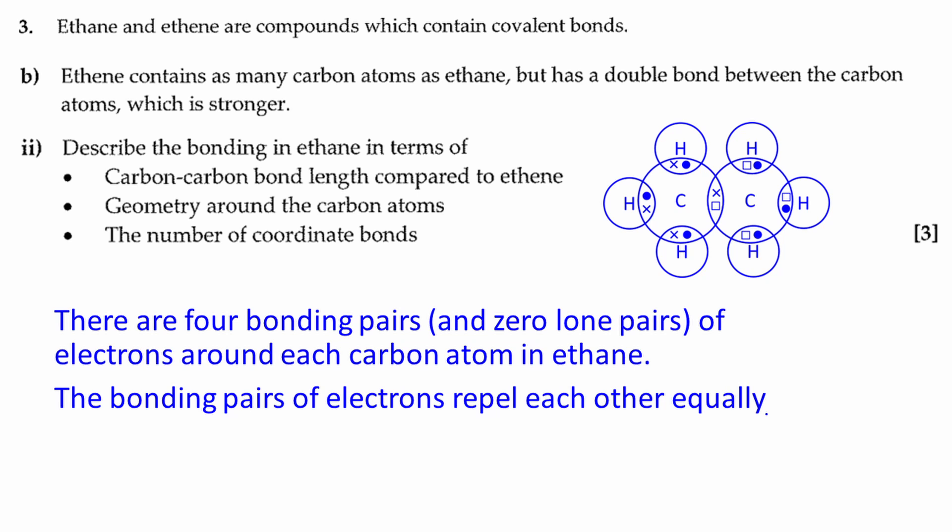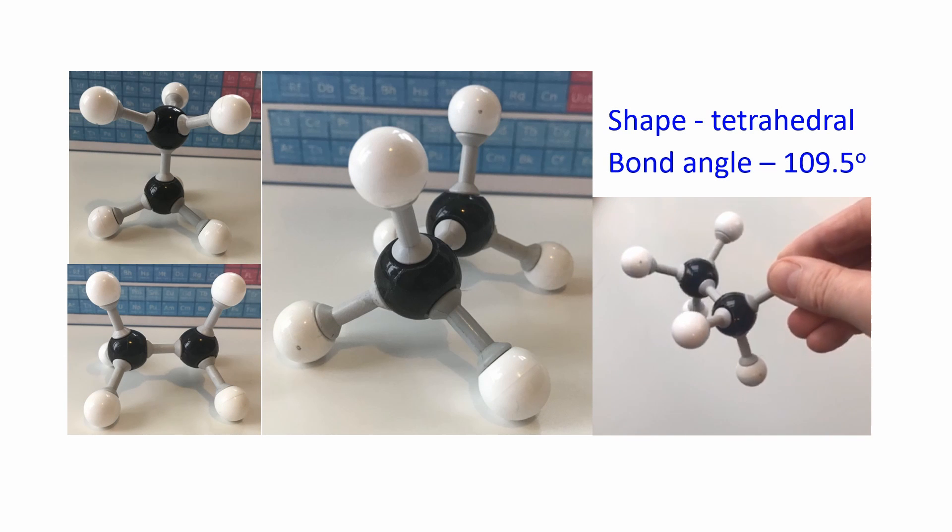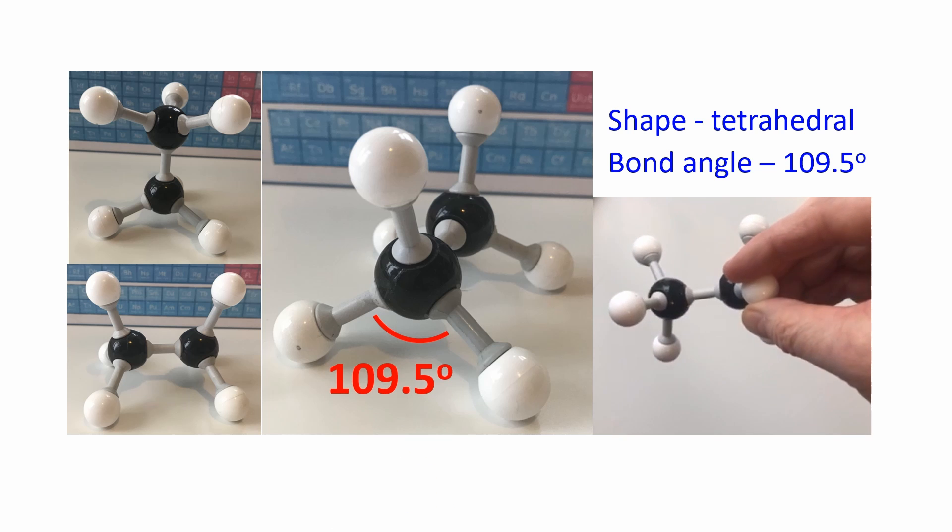Because electrons are negative, the bonding pairs of electrons repel each other equally. The angle between the bonds is 109.5 degrees.